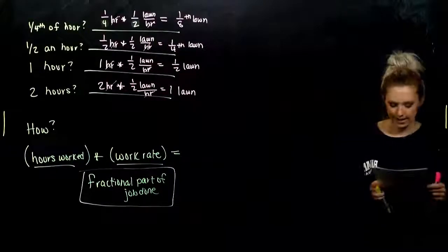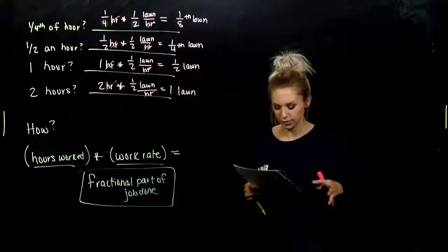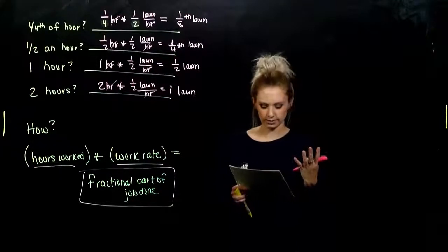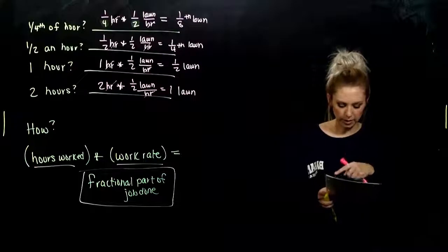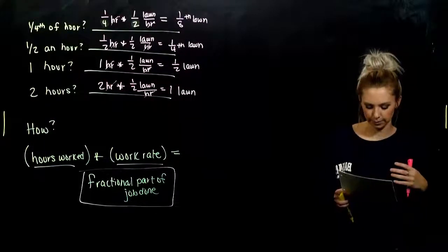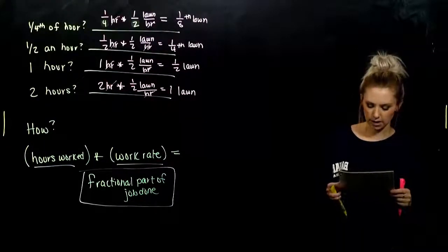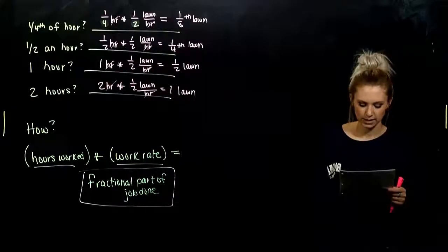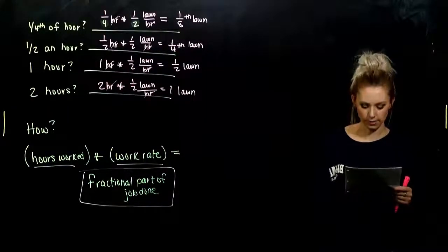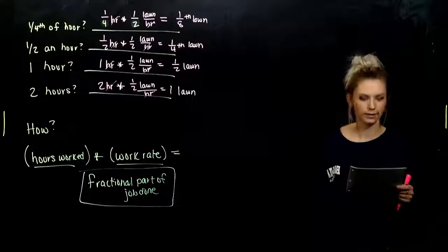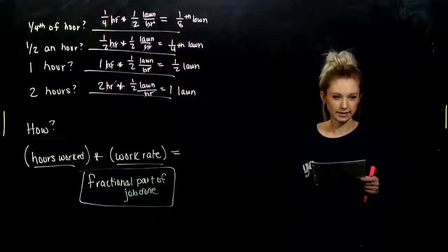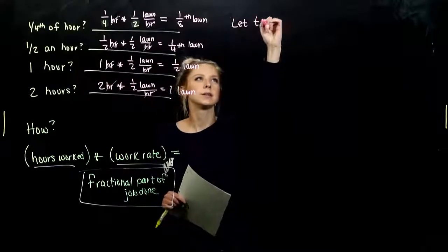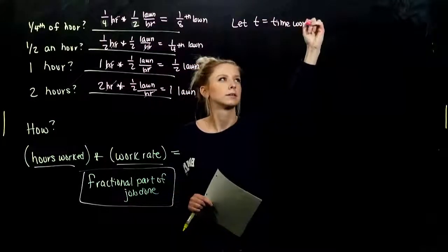Charlie's lawn care has two three-person crews who lay sod. Crew A can lay seven skids of sod in four hours, while crew B requires six hours to do the same job. How long would it take them working together to lay seven skids of sod? What are we being asked to solve for? We're trying to solve for time. I'm going to let T be our unknown. T is the time worked together.